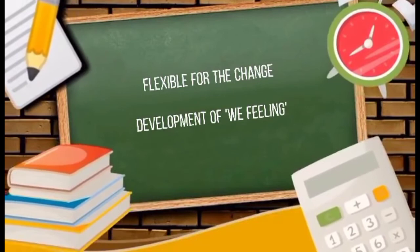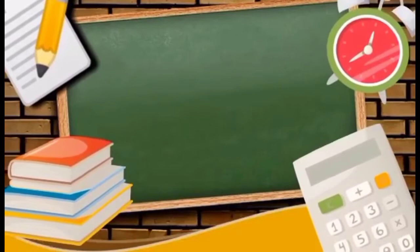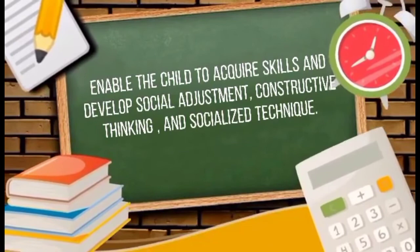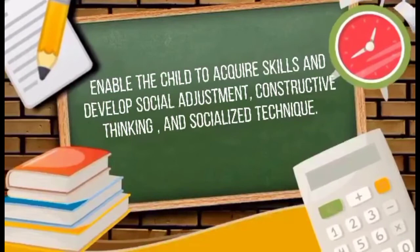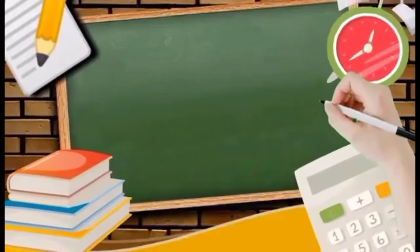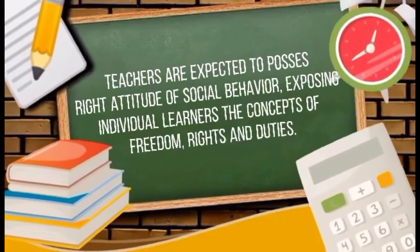The next basis is the methods of teaching. Methods of teaching enable the child to acquire skills and knowledge needed to develop a capacity for social adjustment. They also develop problem-solving and constructive thinking through socialized techniques, project methods, or group methods. The next basis is the role of the teacher. The teacher exposes the concepts of freedom, dignity of the individual, and rights and duties, transmitting these values to the younger generation.